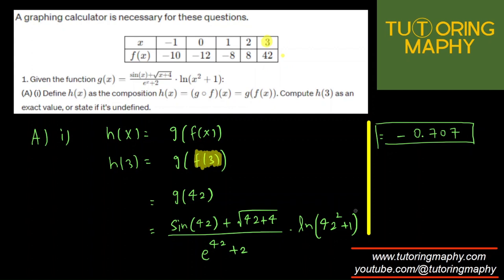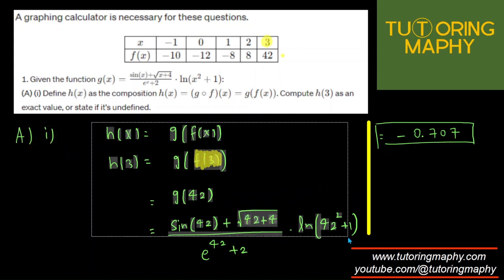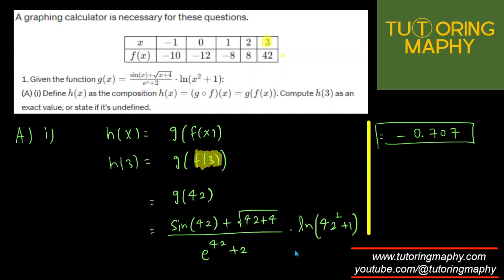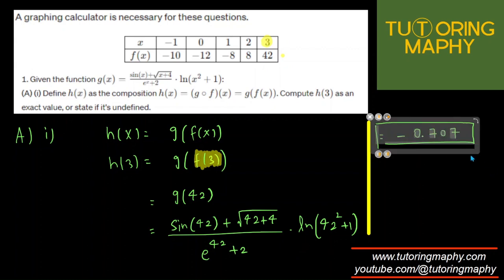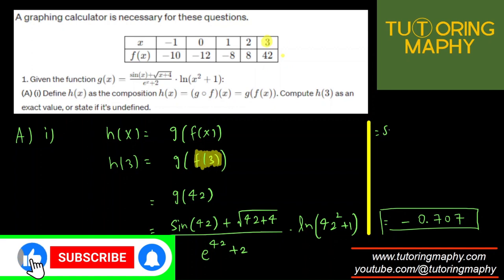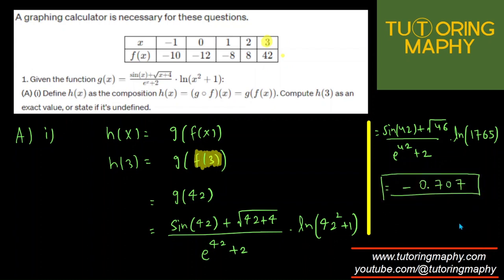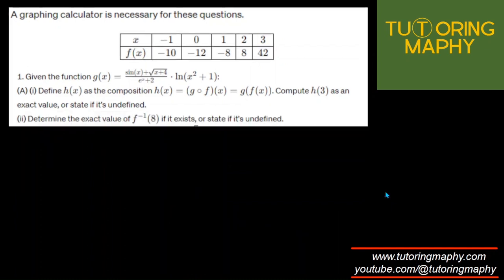You can simplify: 42 + 4 = 46, and 42 squared = 1764, so 1764 + 1 = 1765. The simplified exact form is sine of 42 plus square root of 46, over e raised to 42, plus 2 times ln of 1765, which is approximately negative 0.707. That's part A1.